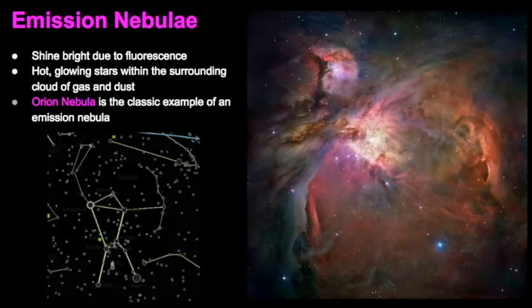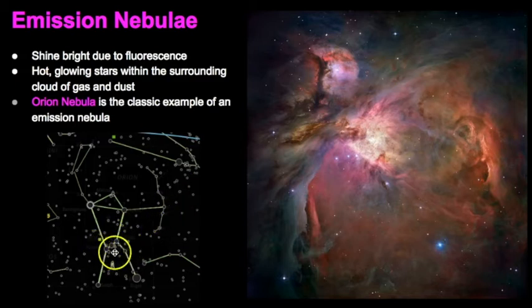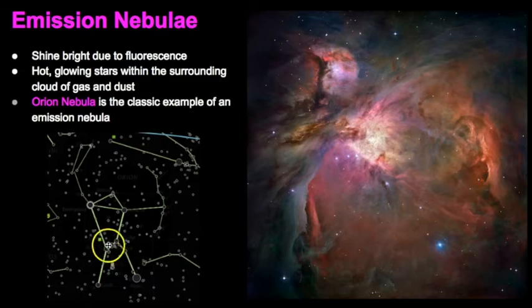The next type is called an emission nebula. These are clouds of gas and dust that glow brightly due to fluorescence — tiny stars are beginning to be born inside the cloud, heating it up and causing it to glow. The Orion Nebula is a classic example, located in the constellation Orion right in the sword, near the belt stars, which is also where the Horsehead Nebula is found.